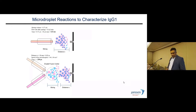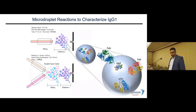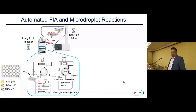Through the droplet fusion zone, the droplets get fused and that facilitates reactions to happen in nearly 250 microseconds. We've used this technology to characterize antibodies — for example, digestion of an antibody into a Fab and single chain Fc using IdeS, an enzyme that cleaves at a single point. Typically this takes 30 minutes to an hour, but performing it in 250 microseconds represents about a 7.5 million-fold increase in speed.